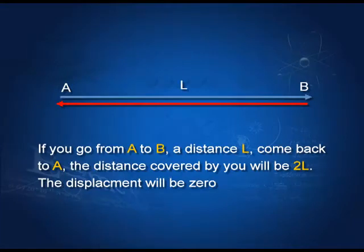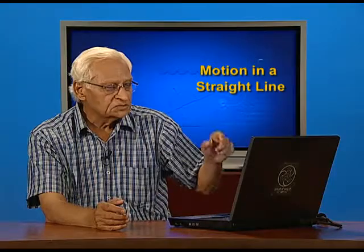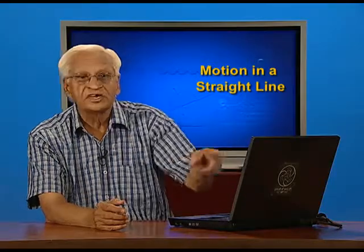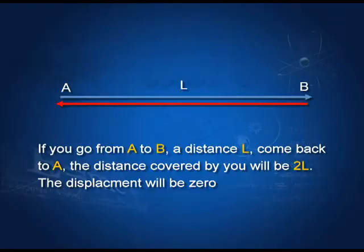If you go from A to B and then back from B to A, your distance covered would be twice the distance between A and B, that is 2L. Whereas the displacement would be 0, because you started from A and have come back to point A.